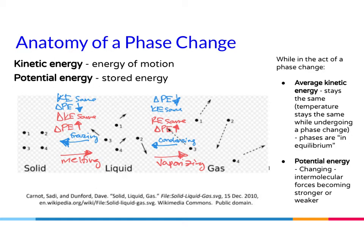The average kinetic energy is equal, therefore temperature remains the same while in the phase change — same for melting and vaporizing. Your potential energy is changing in a phase change: intermolecular forces become stronger as you go from a gas to a solid, which makes potential energy decrease, and intermolecular forces become weaker as you go from a solid to a gas, which makes potential energy increase.